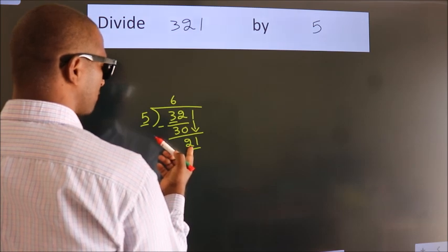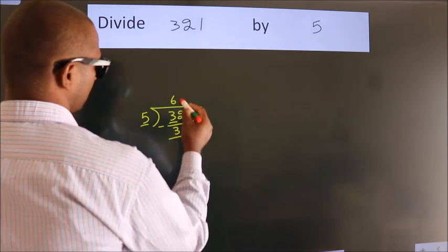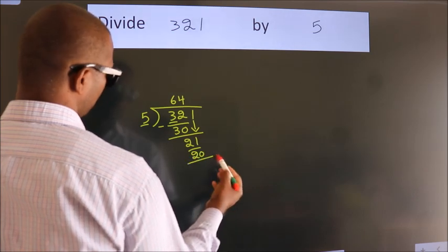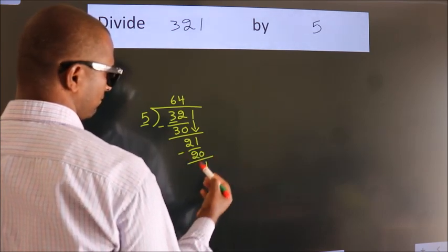A number close to 21 in 5 table is 5, 4, 20. Now we subtract. We get 1.